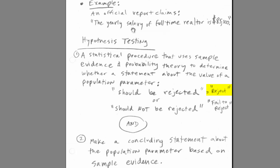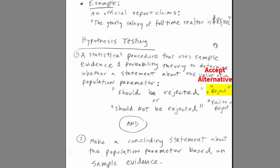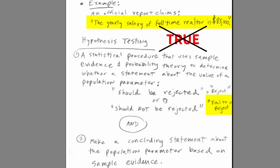Through our statistical procedure, we'll either reject this original statement or fail to reject it. If we reject, we will accept an alternative hypothesis. However, we're going to be careful — if our statistical procedure fails to reject the null hypothesis, we're not going to say that it's true, because we're using statistics and there is some room for error.